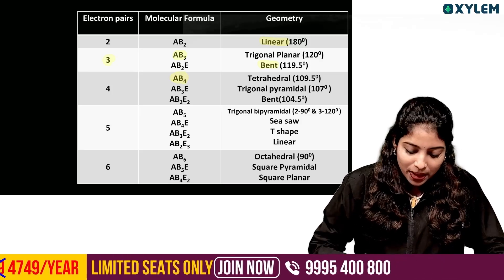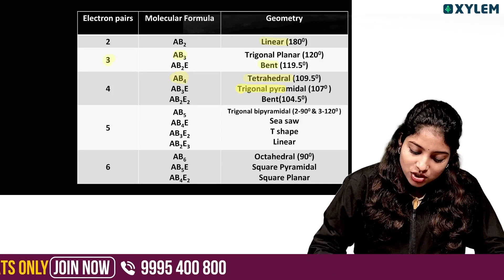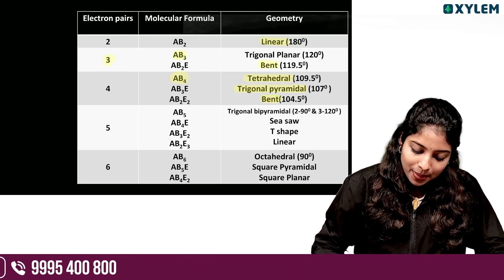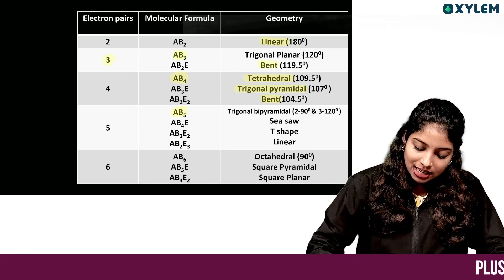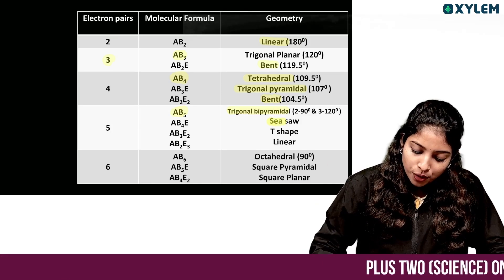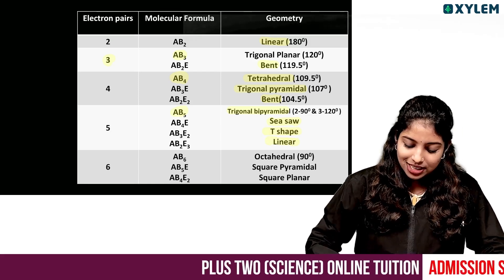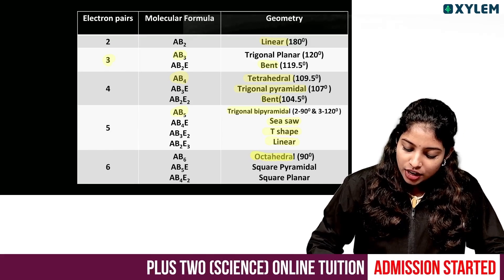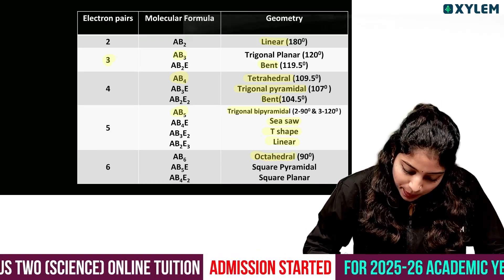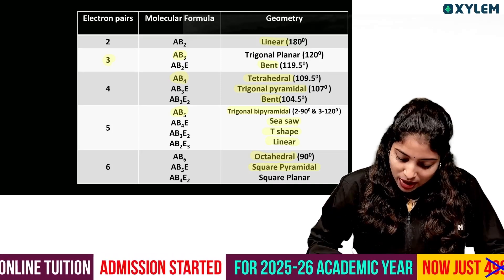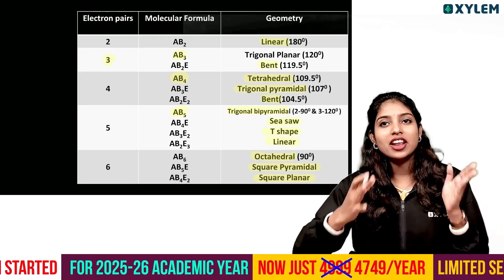To summarize: 4 bond pairs is tetrahedral; 3 bond pairs and 1 lone pair (3-1) is trigonal pyramidal; 2 bond pairs and 2 lone pairs (2-2) is bent; 5 bond pairs is trigonal bipyramidal; 4-1 and 3-2 is T-shape; 2-3 is linear; 6 bond pairs is octahedral; 5-1 is square pyramidal; 4-2 is square planar.